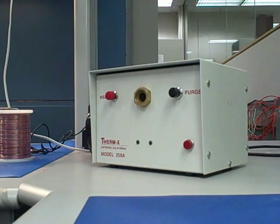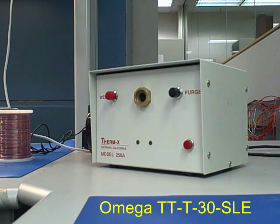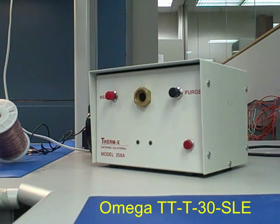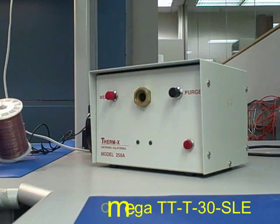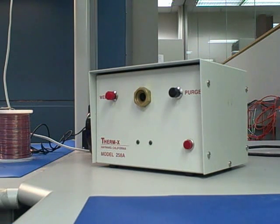So anyway we will start with type T Teflon coated thermocouple wire from Omega. The part number on that is TT-T-30-SLE. It's a copper and constantine wire. It's a 30 gauge.